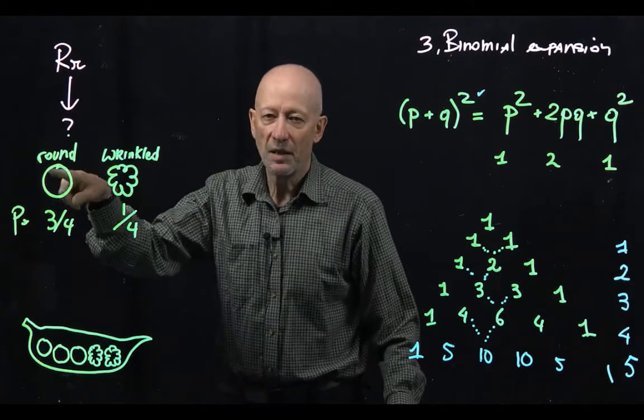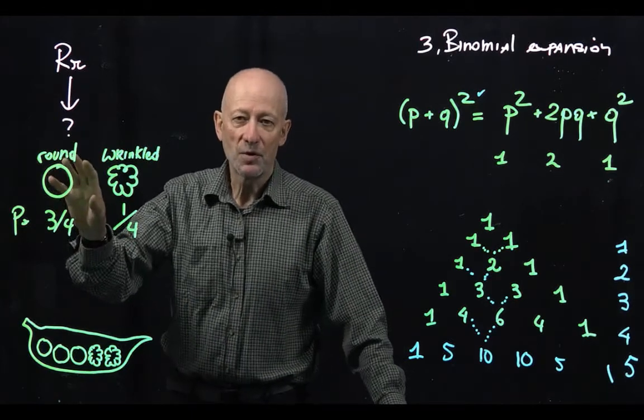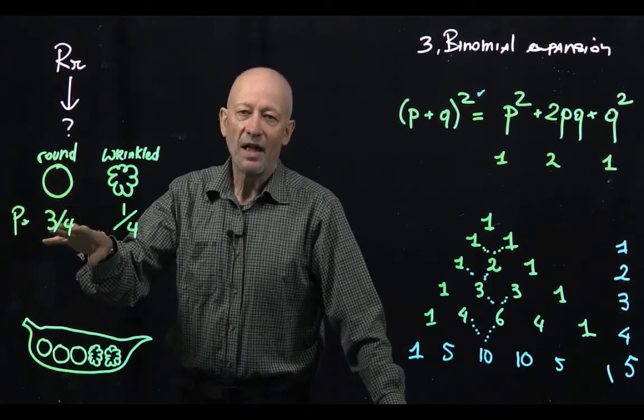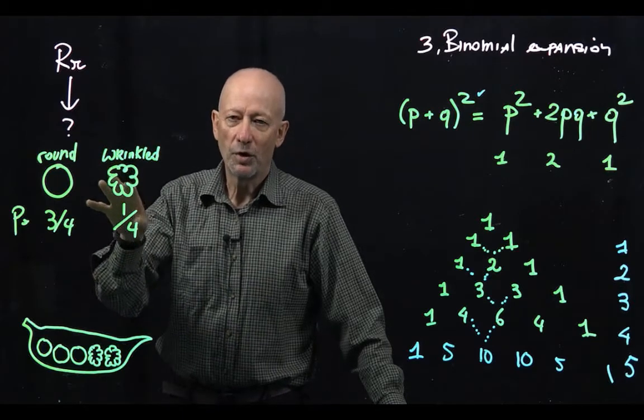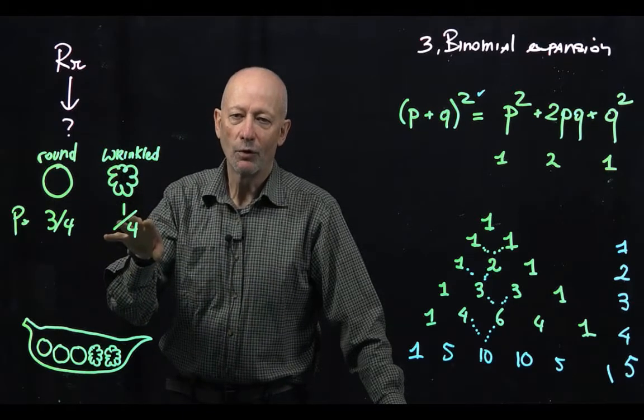One progeny will be round, represented by this circle. This is the round seed and we know the probability of that is 3 out of 4. The other type of progeny is wrinkled. We know the probability of that is 1 out of 4.